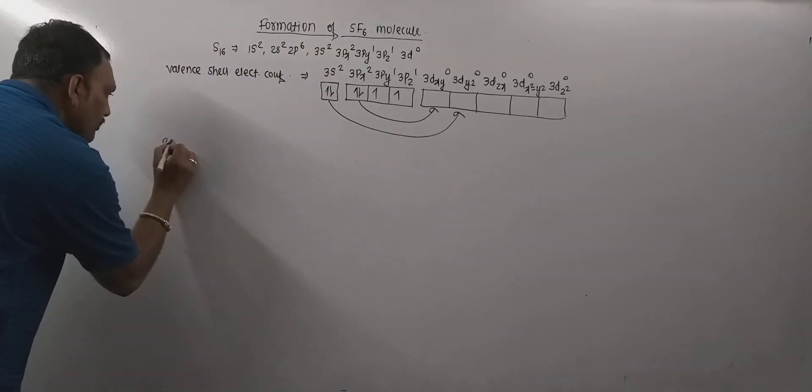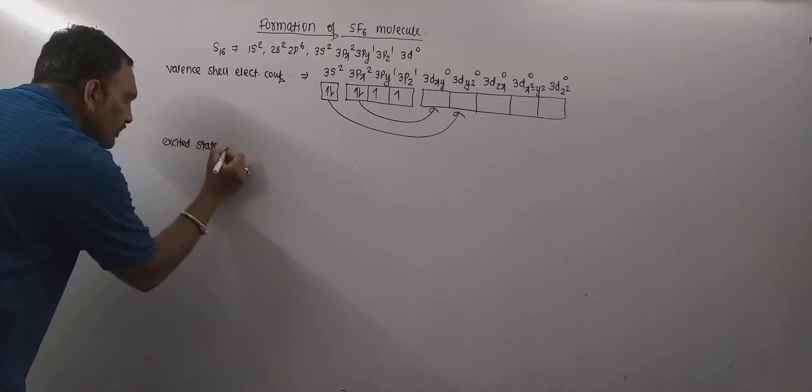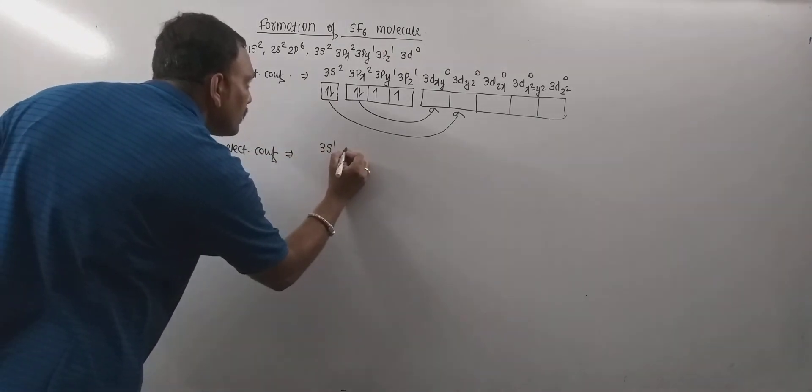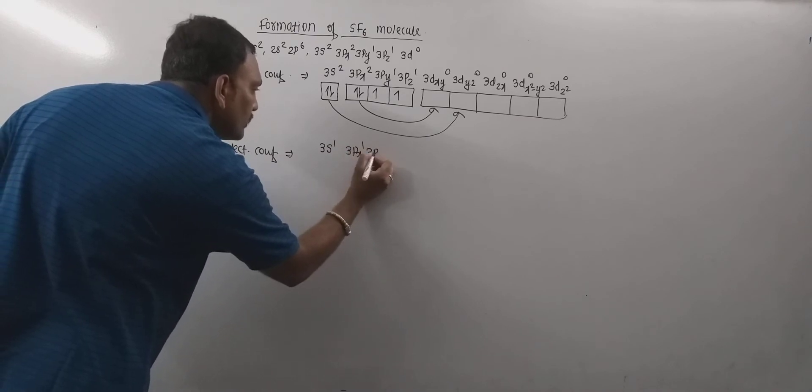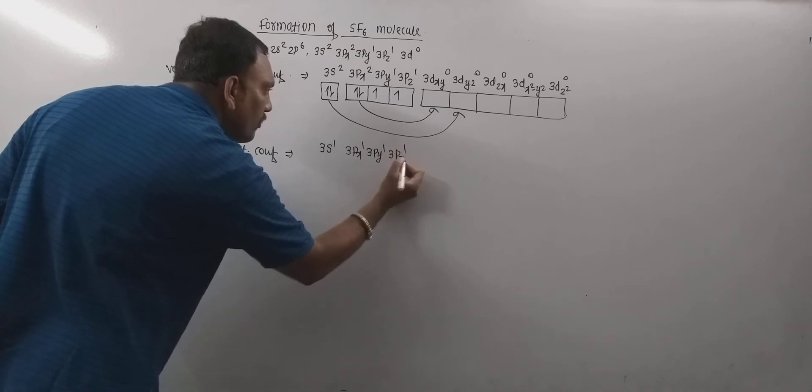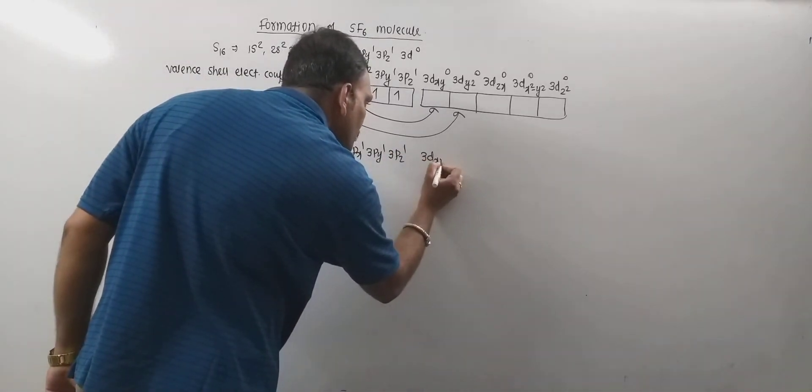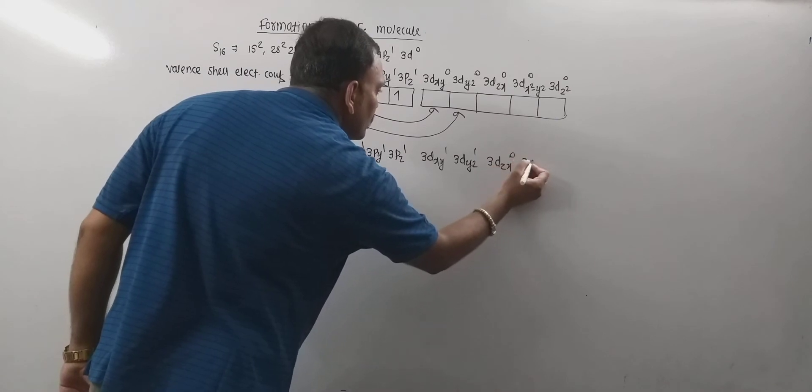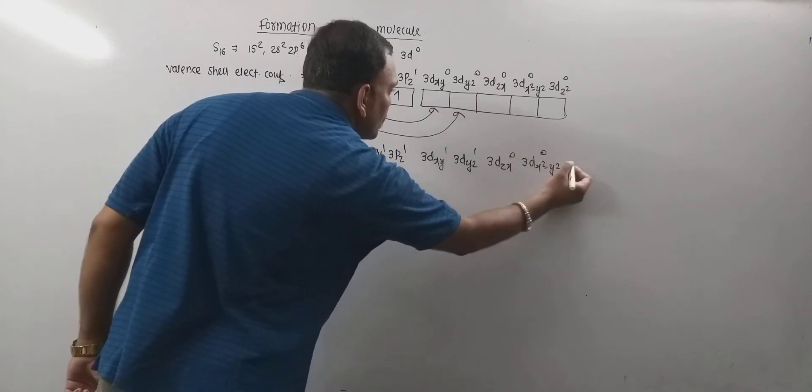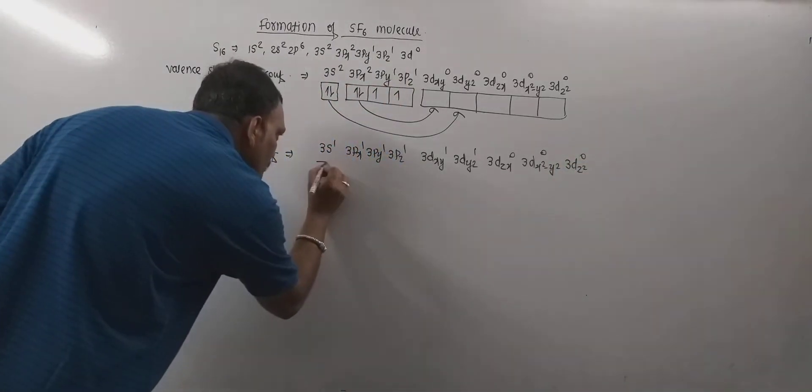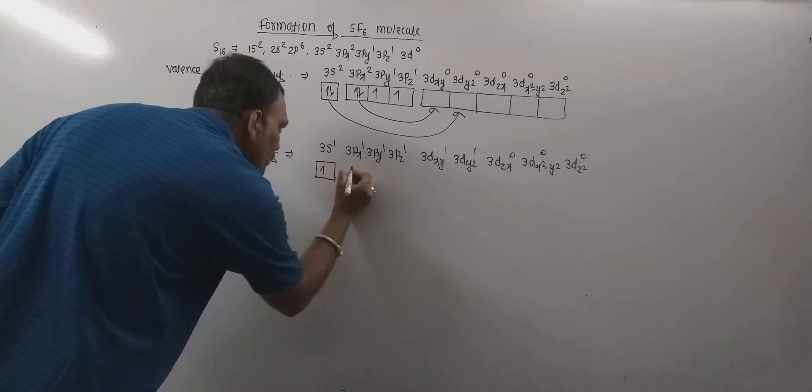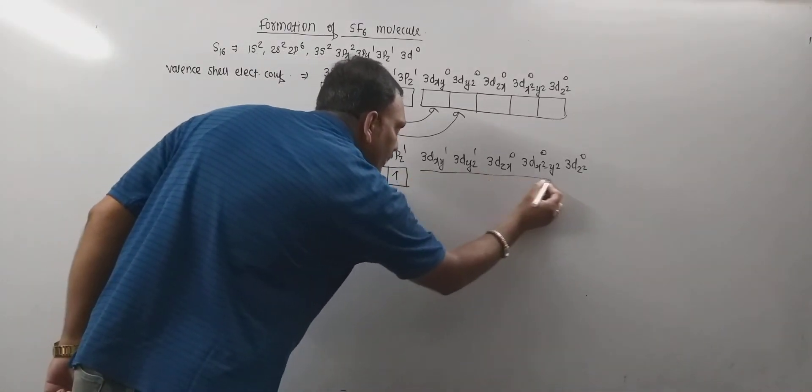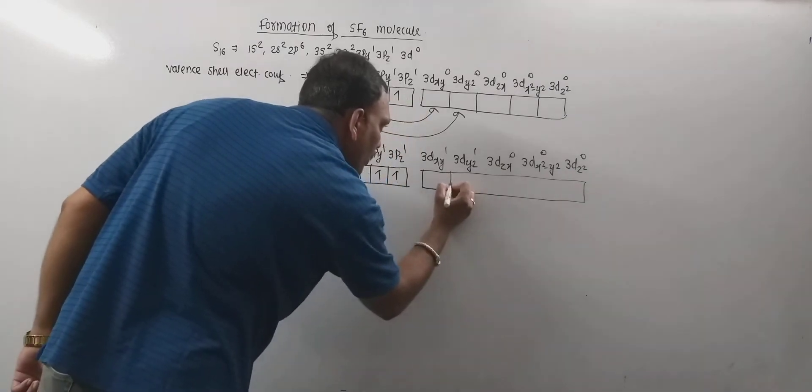Thus, the excited state electronic configuration, excited state electronic configuration of sulfur can be 3s1, 3px1, 3py1, 3pz1, 3dxy1, 3dyz1. Now, box diagram can be shown in this manner. So, this is the box diagram for the excited state electronic configuration of sulfur.